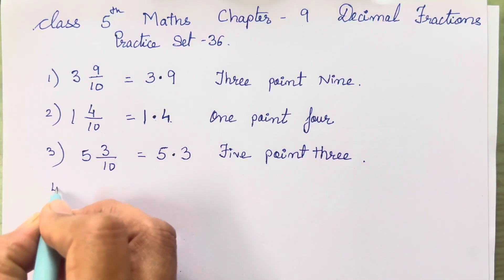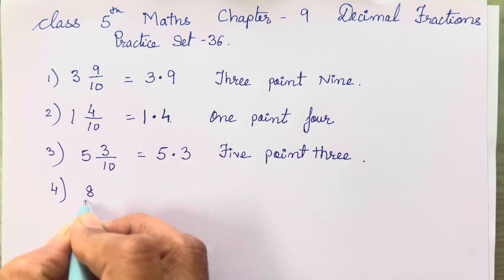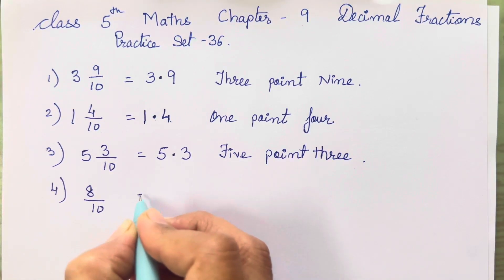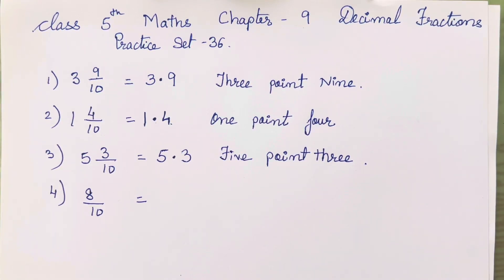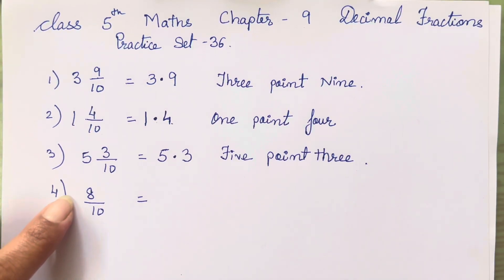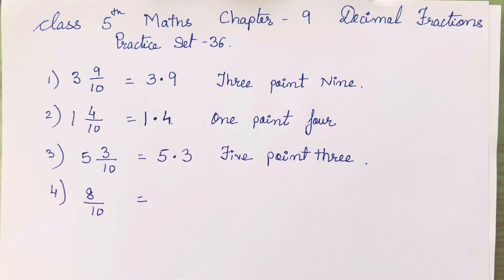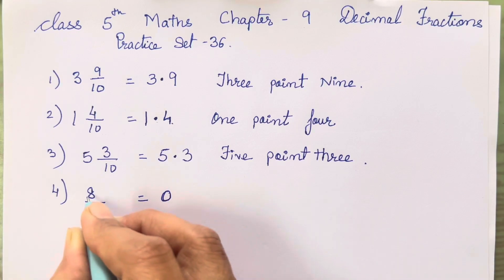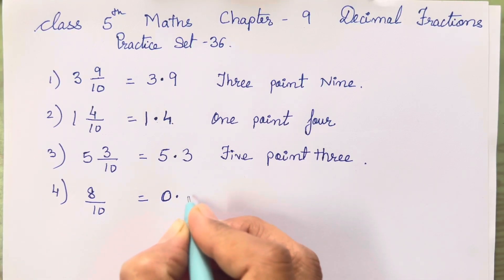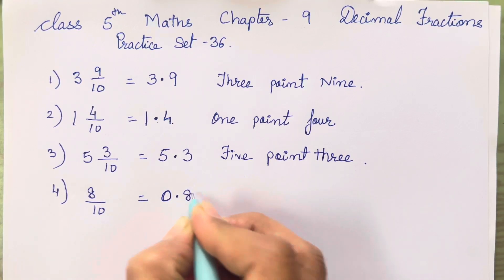The fourth one is 8/10. Now you will notice there is not a mixed fraction — only a simple fraction has been given, unlike the mixed fractions I showed you earlier. There is no whole number here. So what you have to do is write a 0 to the left of the decimal point, and 8 will come after the decimal point.